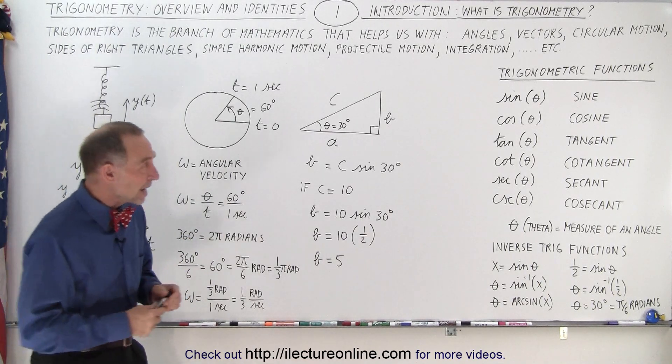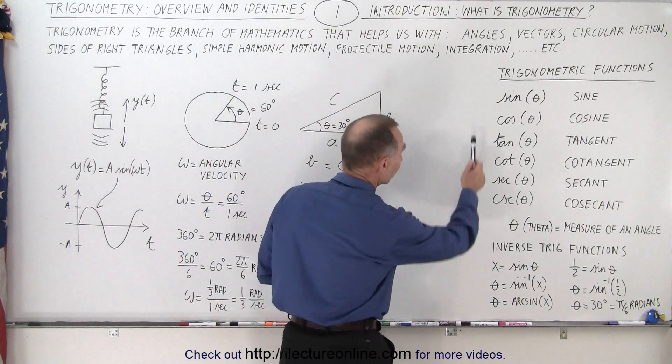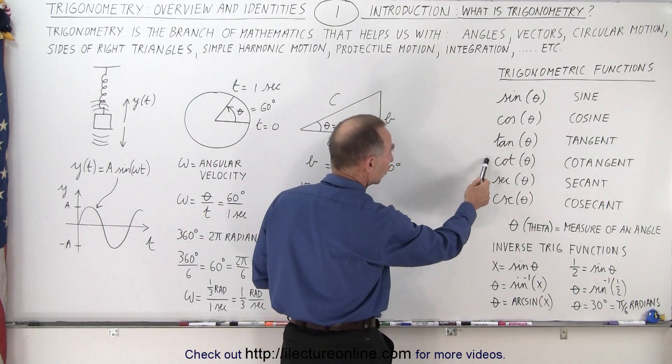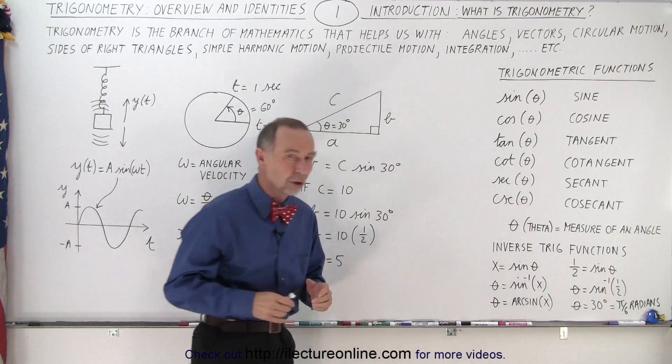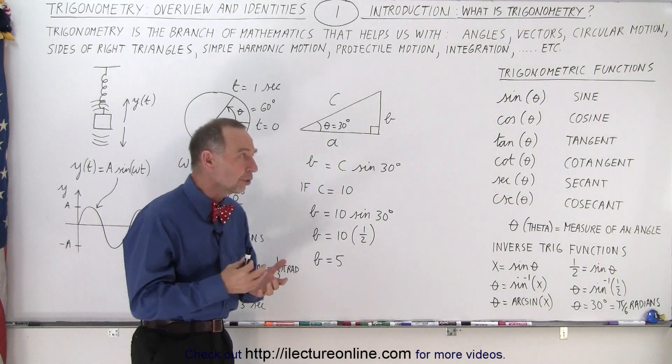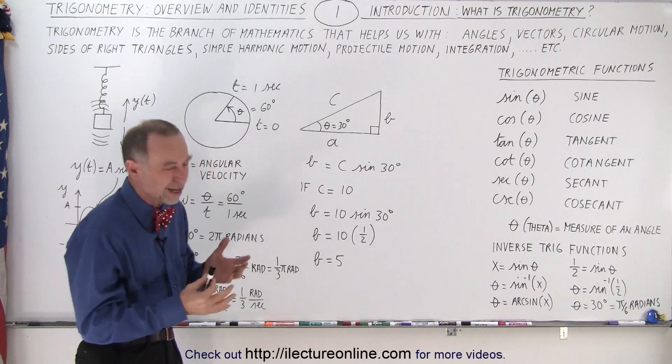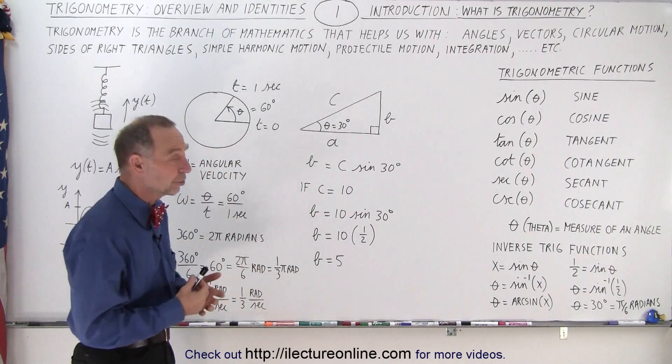Essentially we have six main trigonometric functions: the sine, cosine, tangent, cotangent, secant, and cosecant. However, the first three—sine, cosine, and tangent—are the most used of the six functions. The other three are more theoretical in nature. We don't use them that much.